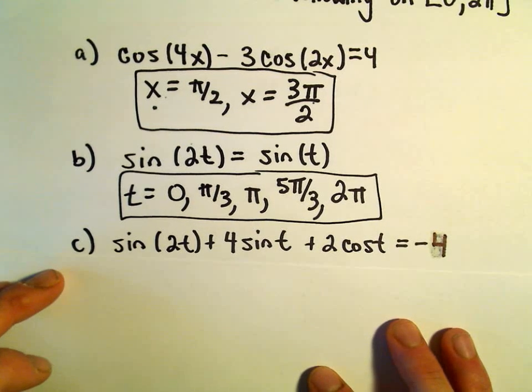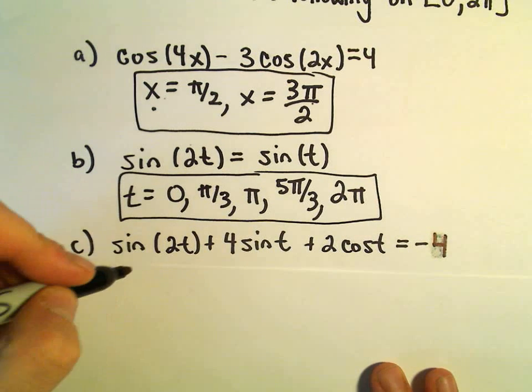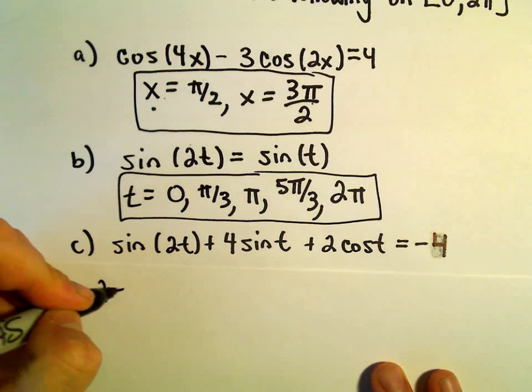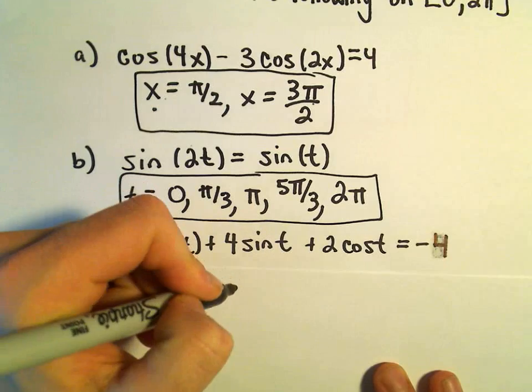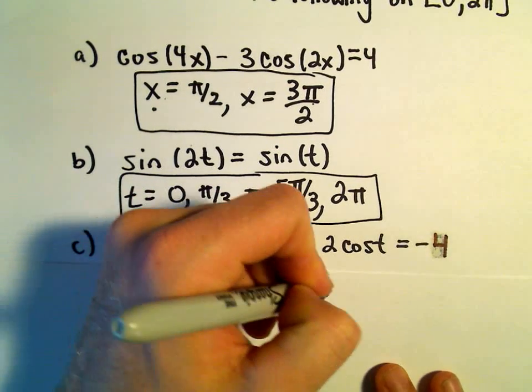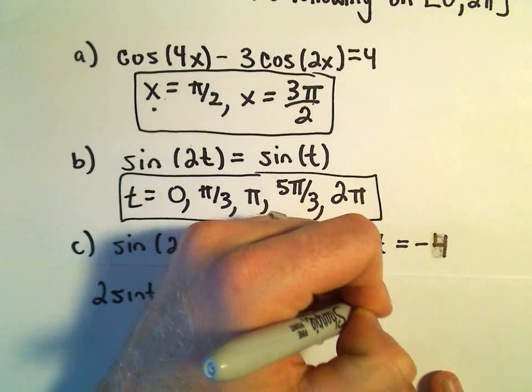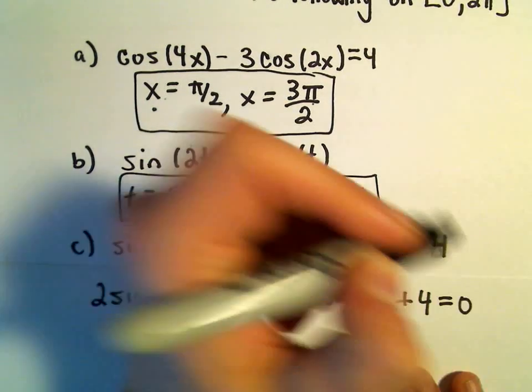Okay, again, you know, not everything, but you're going to have tricks to do as many problems as you can. So, okay, so I'm going to replace the sine of 2t here with 2 sine t times cosine of t plus 4 sine t plus 2 cosine t. What I'm going to do is add the 4 to both sides.